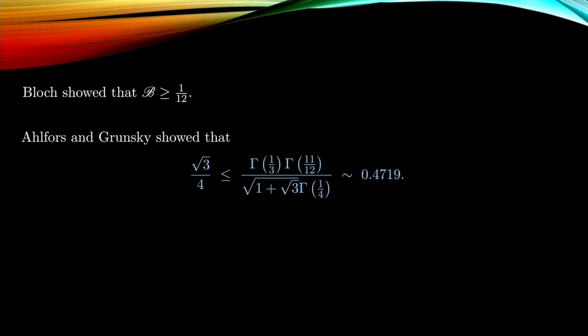So Bloch was able to show that this was bounded below by 1/12. And Ahlfors was able to show that it was bounded below by √3/4. And Ahlfors and Grunsky were able to show that it's bounded above by Γ(1/3)Γ(11/12)/(√(1+√3)Γ(1/4)), which is about 0.4719.